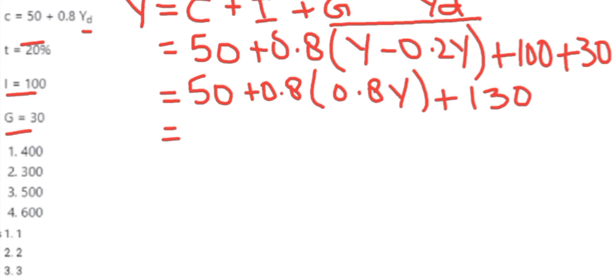We can write this as 50 plus 130, which equals 180. So we have 180 plus 0.8 times 0.8Y, which equals 0.64Y. Or we can write Y equals this.